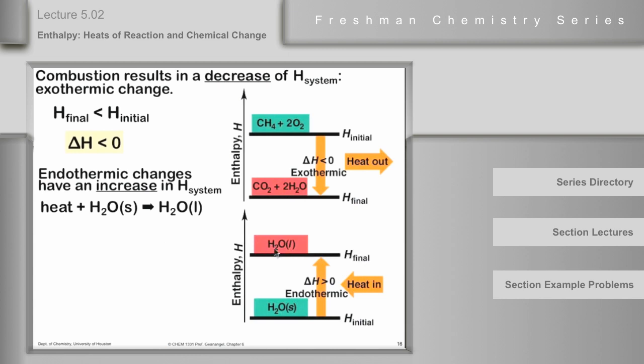H final is up here. The liquid water has a higher enthalpy than the solid water does, and we know that because we know heat comes in, as we just described, so delta H will be greater than zero, and this will be an endothermic process. Another example of an endothermic process,